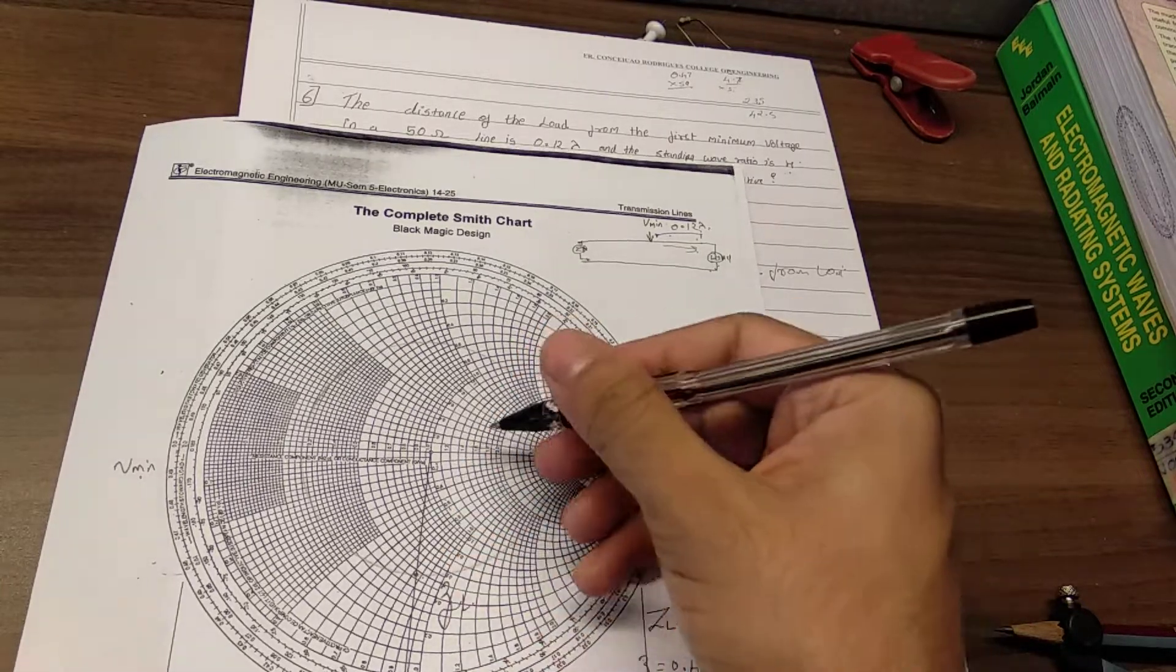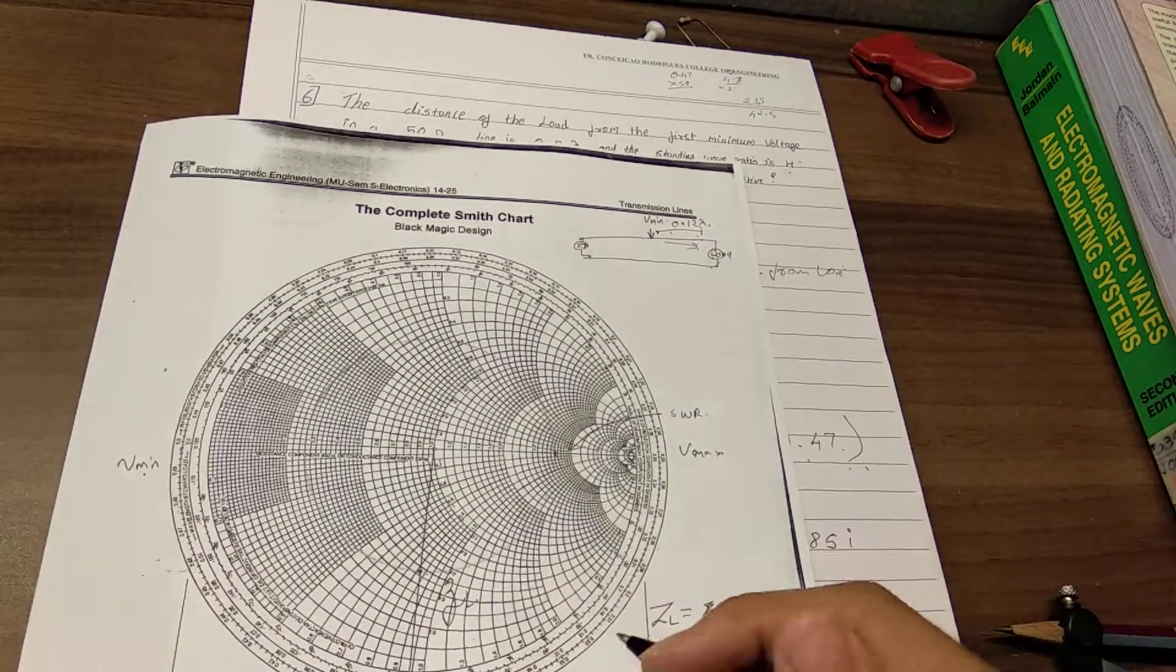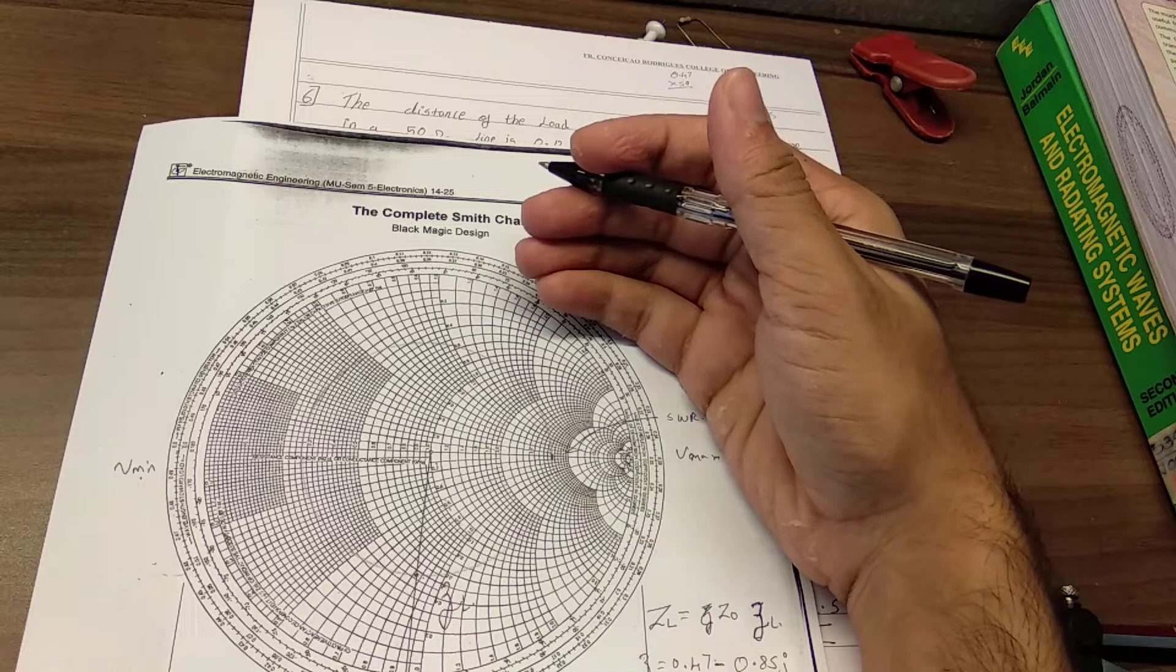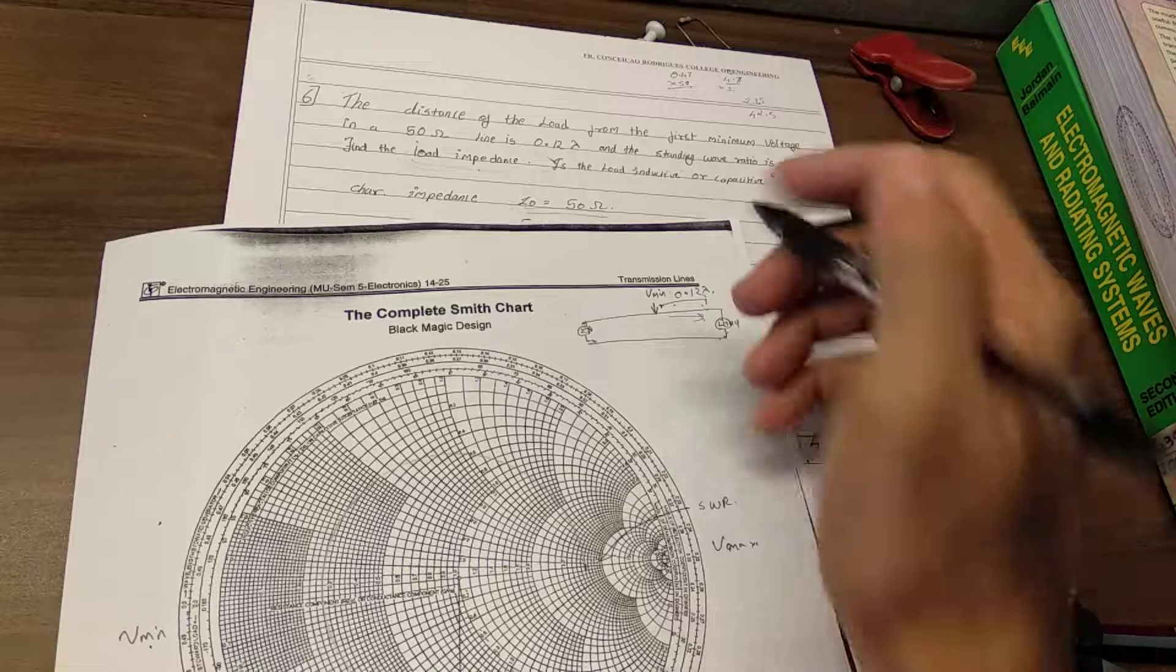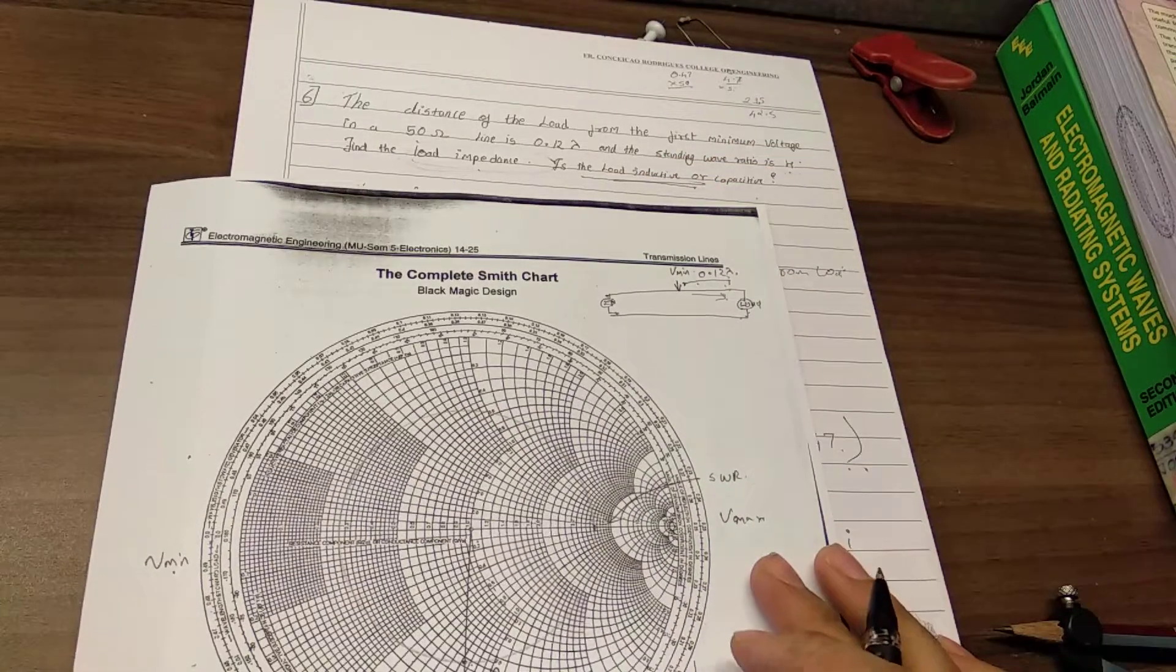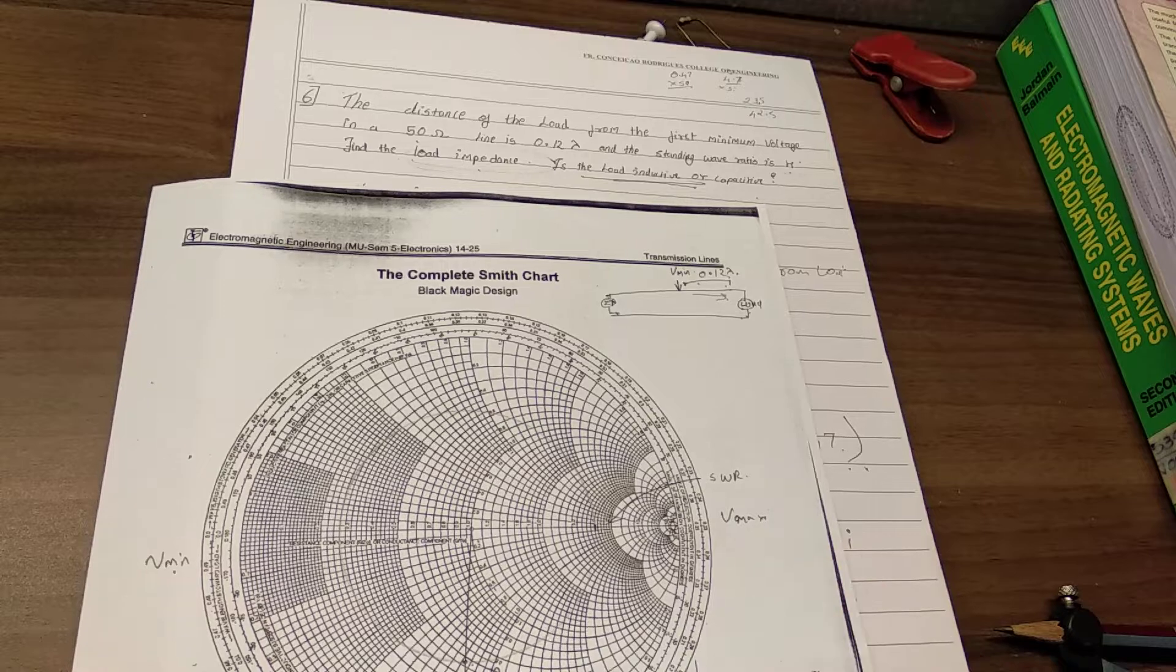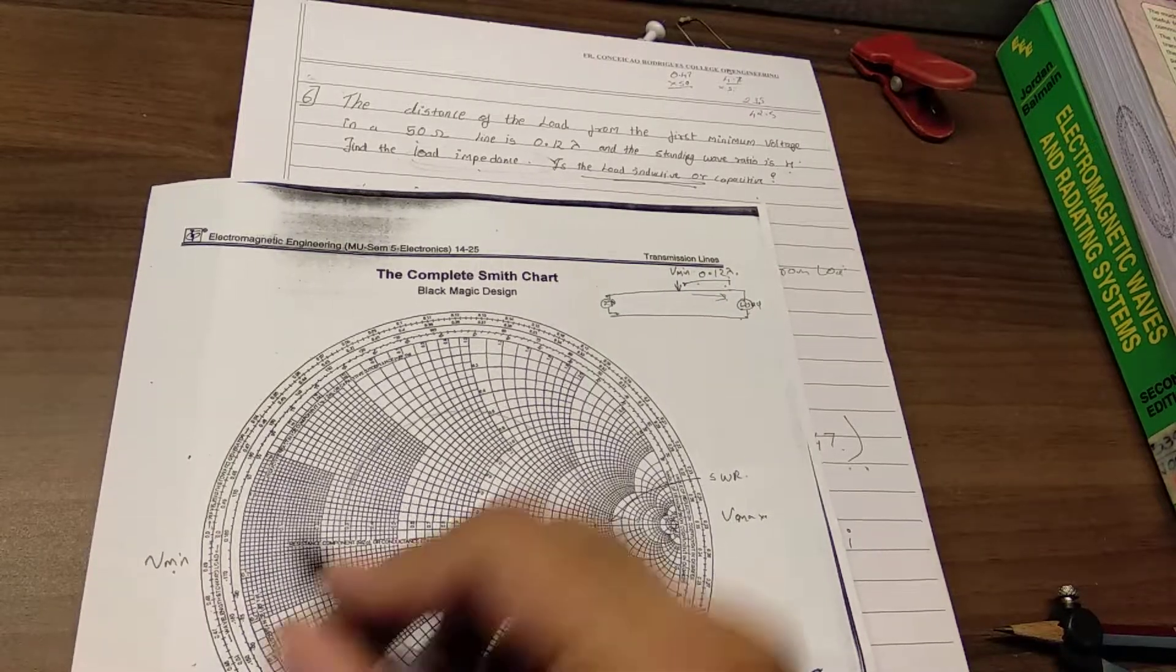So now this sign would be minus, just because it is below the x-axis. Anything below the x-axis is minus, and anything above the x-axis is plus. So as it is below the x-axis, we answer our question that the load is inductive or capacitive. Of course it is capacitive.